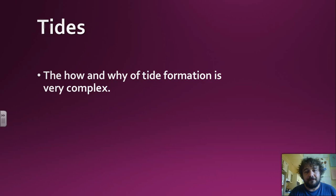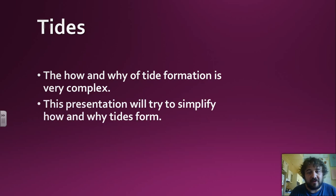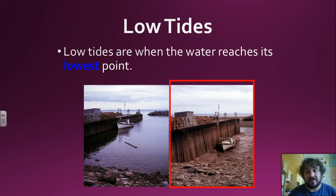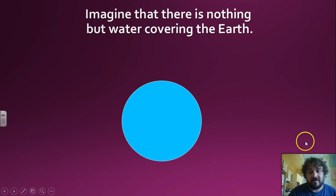So tides, why and how it does it is quite complex. We're not going to focus on that too much. We're going to simplify it. So basically the Moon is here, it pulls the water towards it as the tide rises. High tides are when the water reaches its highest point. Low tides, like we see here, are when water reaches its lowest points.